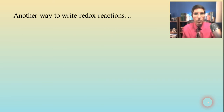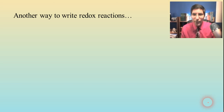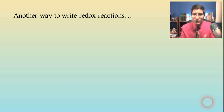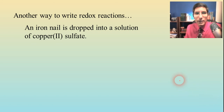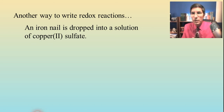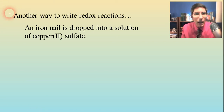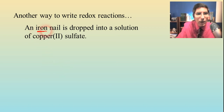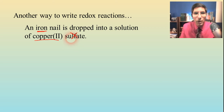Let's take a look at another way to write redox reactions, because what I just did by balancing the charge may look a little confusing. I'd like to show you a way that might be easier. We're going to take an iron nail and drop it into a solution of copper sulfate. You have to realize what the spectator ion is going to be — it's the sulfate. The iron is going to react with the copper(II) ion.